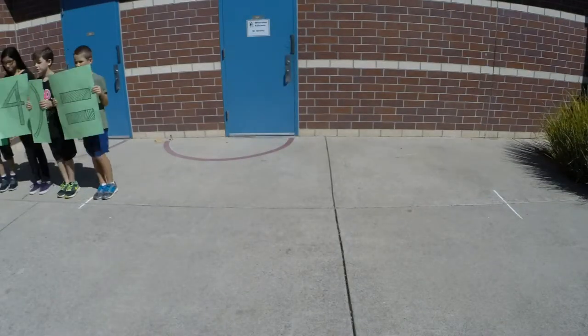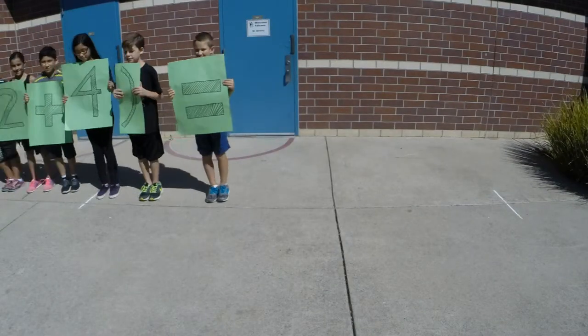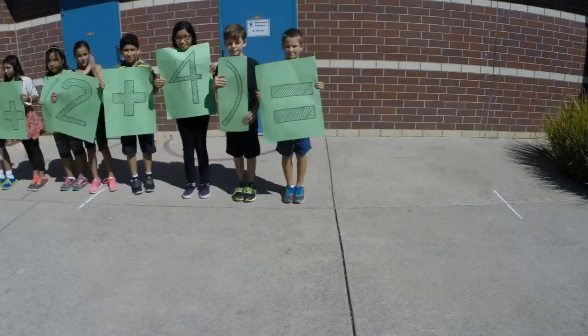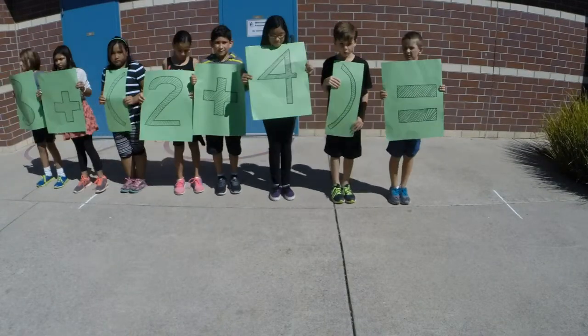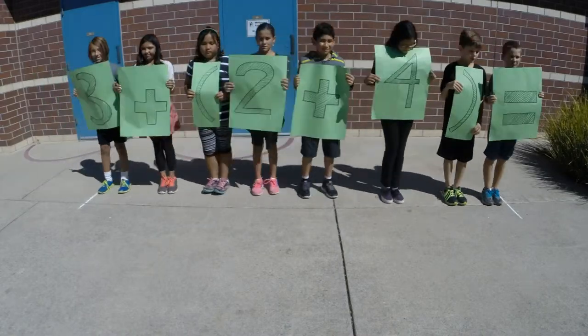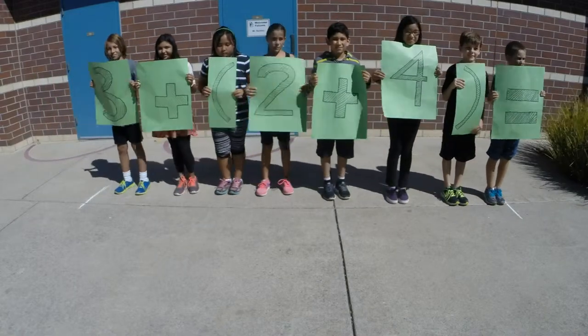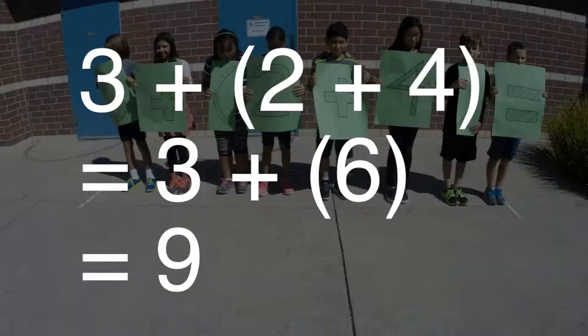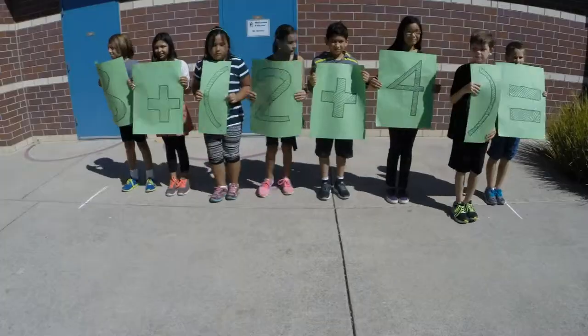For example, let's use the problem 3 plus quantity 2 plus 4 close quantity. The addends 2 and 4 are grouped inside the parentheses. Now we add 2 plus 4 and get the sum of 6. We add 6 to 3 and get the sum of 9. We will now use the associative property to switch the parentheses.